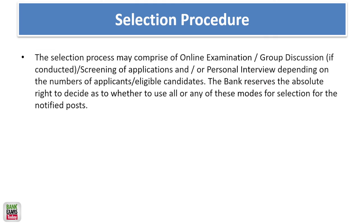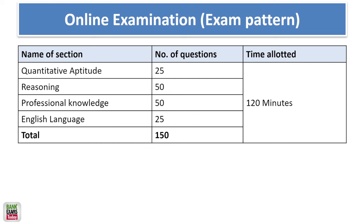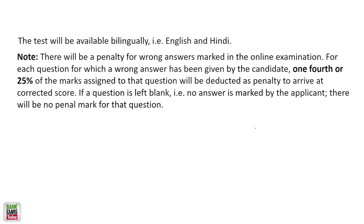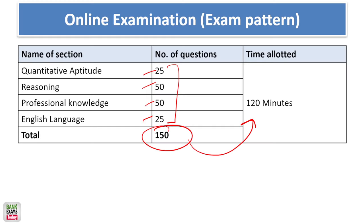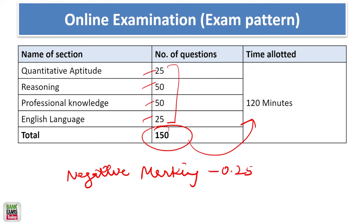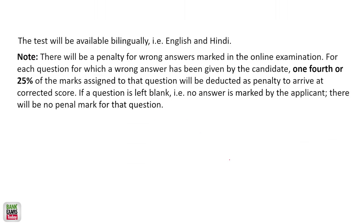There is a written exam followed by an interview. The exam has four sections: Quantitative Aptitude (25 questions), Reasoning (15 questions), English Language (25 questions), and Professional Knowledge (15 questions). Total 150 questions, with 120 minutes allotted. One-fourth negative marking applies — 0.25 marks will be deducted for every wrong answer.